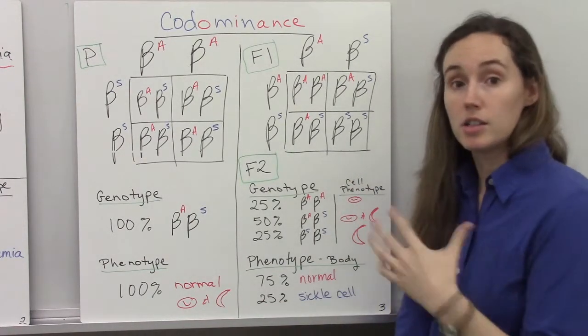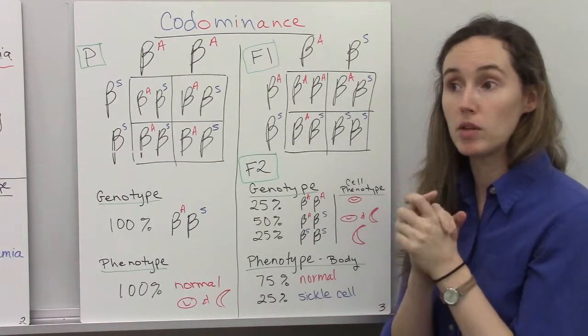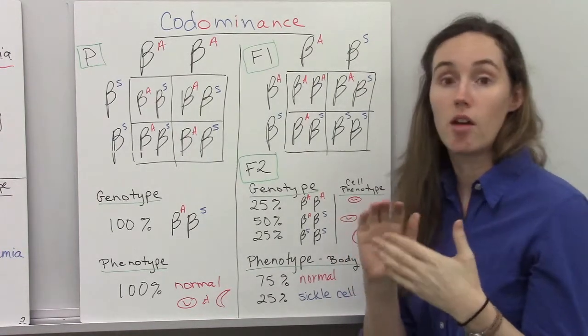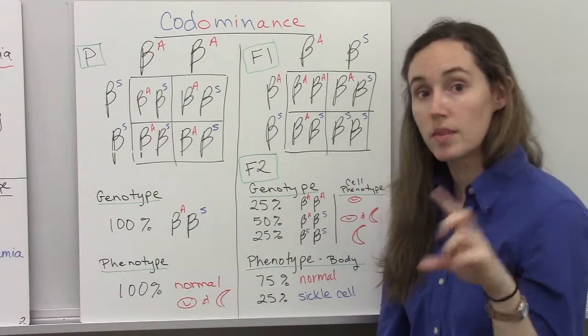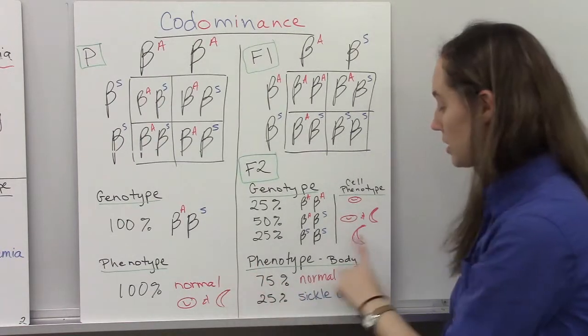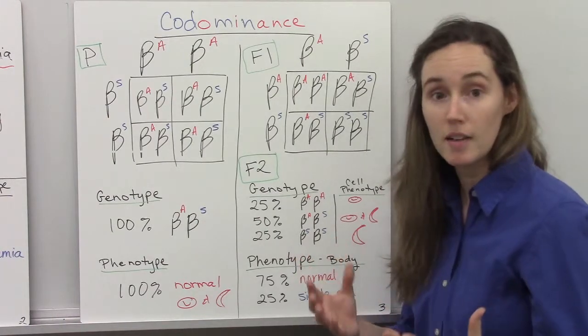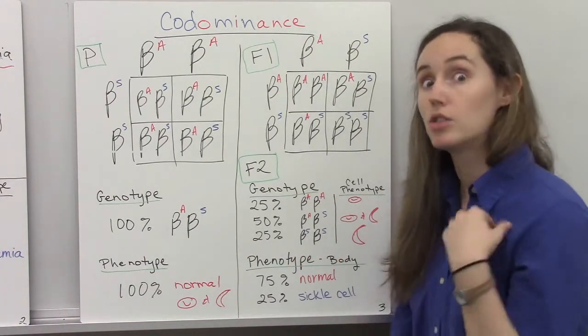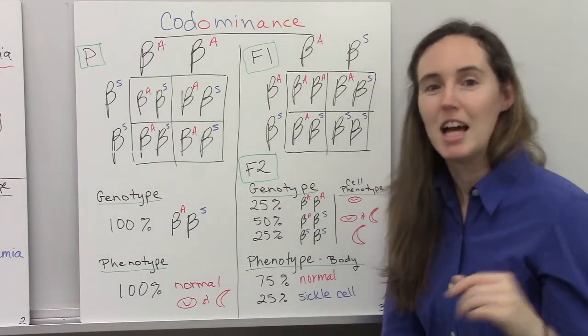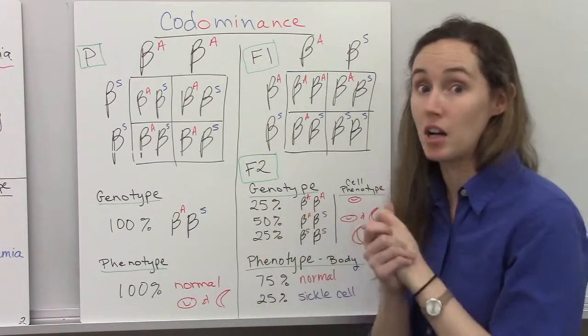Sickle cell anemia, this is just a little sidebar but true, is found primarily in peoples of African descent and descent of other equatorial regions in the world. Because what's interesting is that sickle shaped cells cannot support the parasite that causes the disease malaria. So, if you have sickle shaped cells, you can't get malaria and that's the number one killer in a lot of those areas.